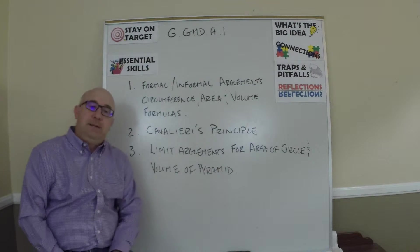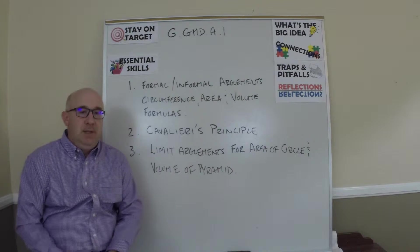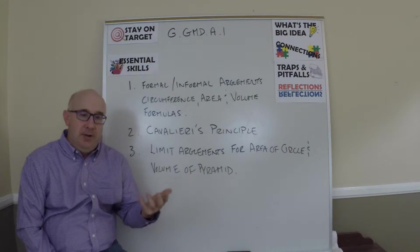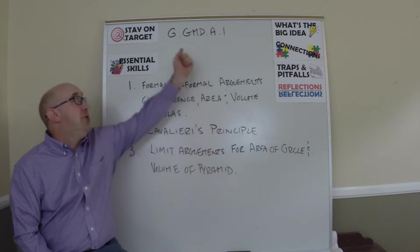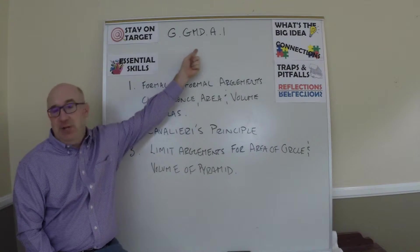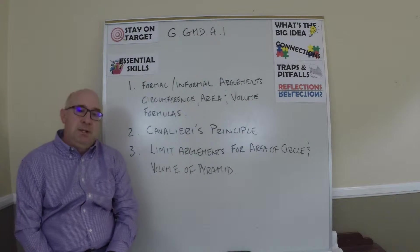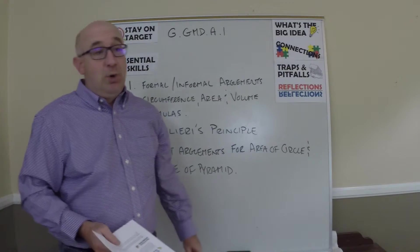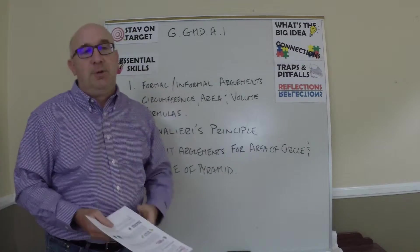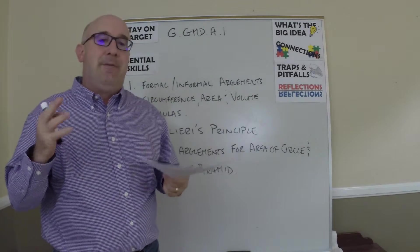All right, let's take a look at objective G-GMD.A.1. This area deals with the topics of area, circumference, volume — all things about geometric measurement. This particular objective introduces us to the geometric measurement world by looking at informal and formal ways to set up formulas.